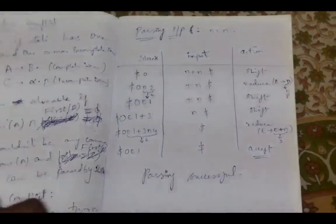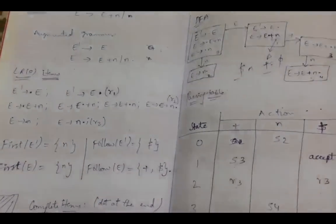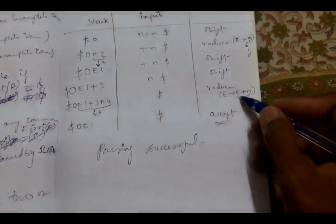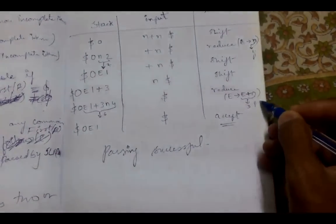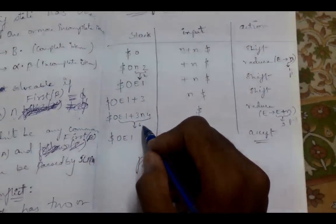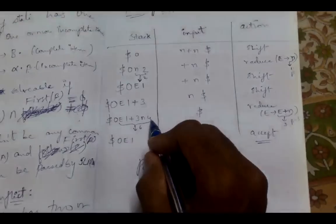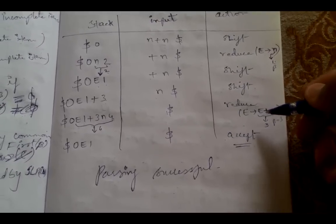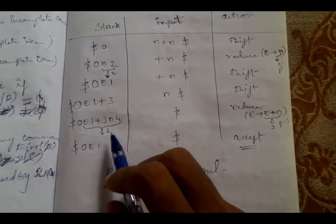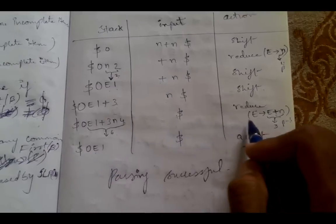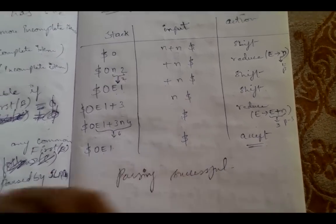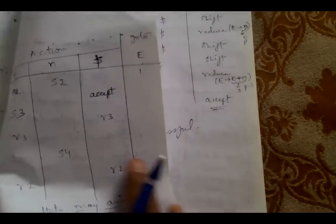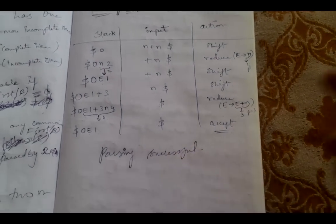State 4 on dollar gives R2 (E → E + N). The right-hand side has three elements, so we pop 2×3 = 6 elements from the stack, removing E 1 + 3 N 4, leaving $0. We then push E and the goto for State 0 on E, which is 1: stack = $0 E 1. State 1 on dollar gives Accept, so the string N + N is accepted by the SLR(1) parser.